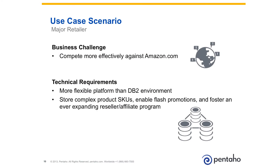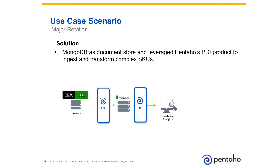A major retailer has a challenge in that they want to compete more effectively with Amazon. They also want to have a more flexible platform than their current DB2 environment, in which they can store complex SKUs, better enable promotions, and improve their growing affiliate program. Mongo was selected as the new data store for their web applications, and Pentaho Data Integration was used to migrate data from DB2 into Mongo. PDI can also be used to pull out aggregated Mongo data for business analysis, predictive analytics, and other reporting-type purposes.